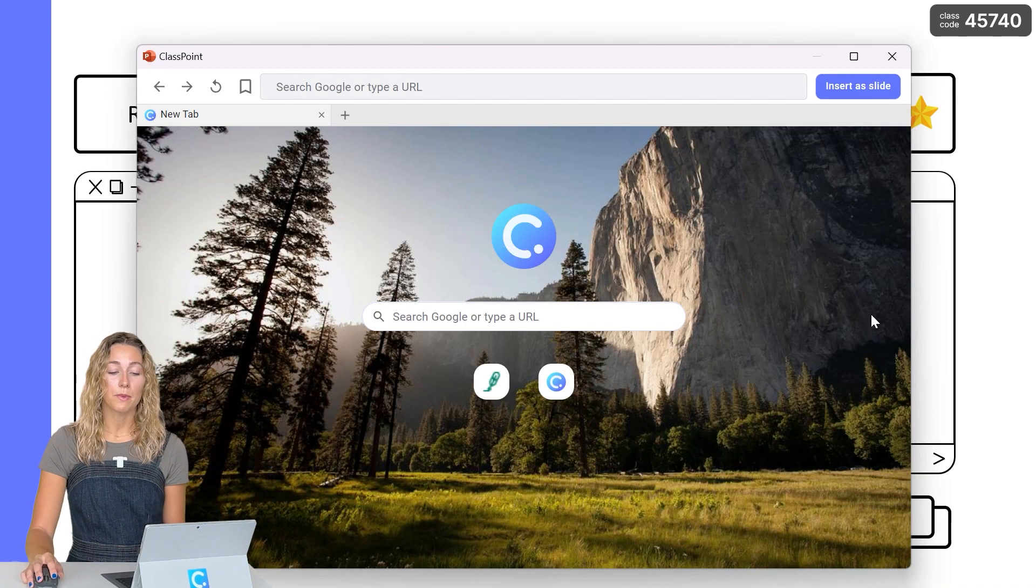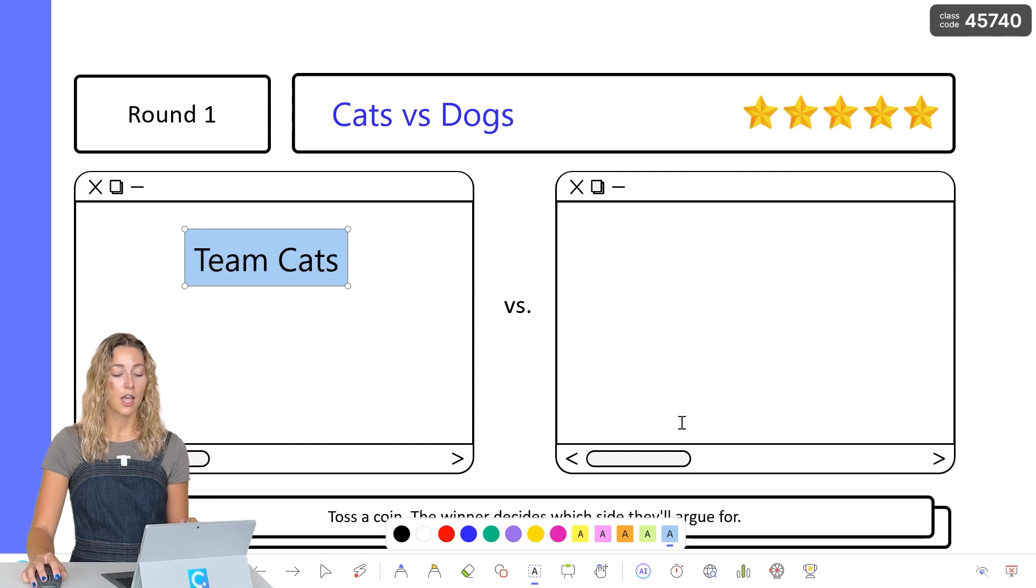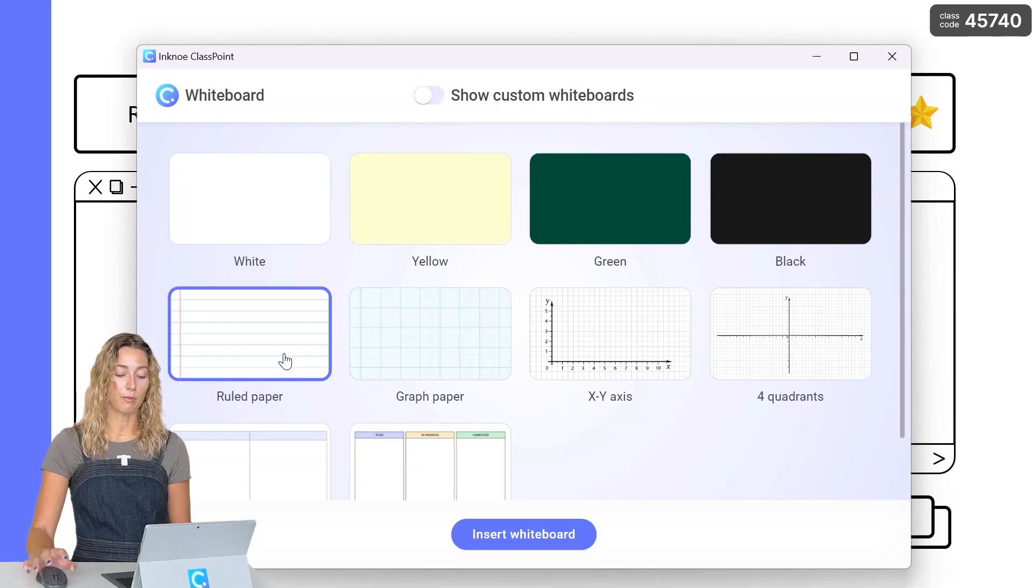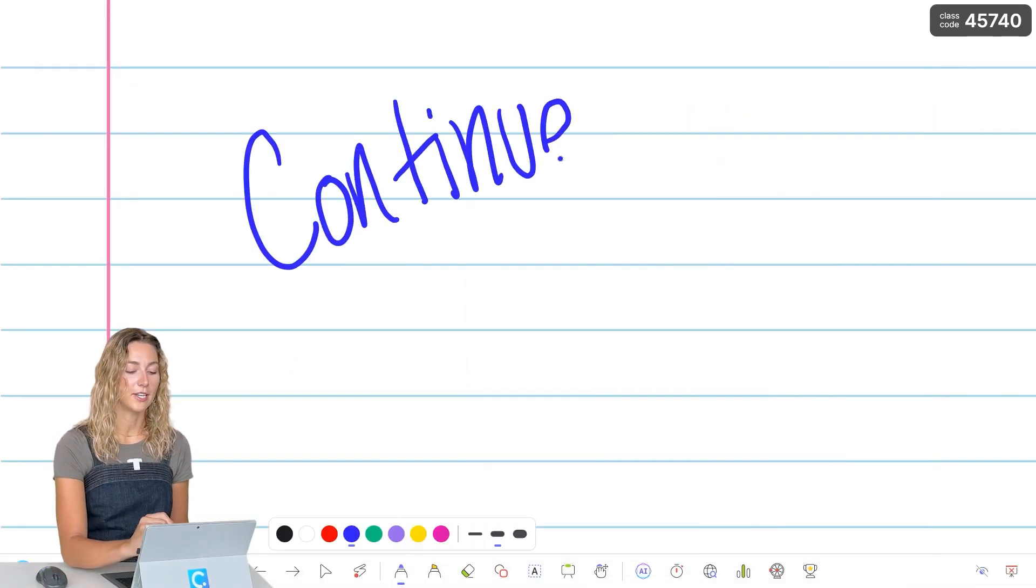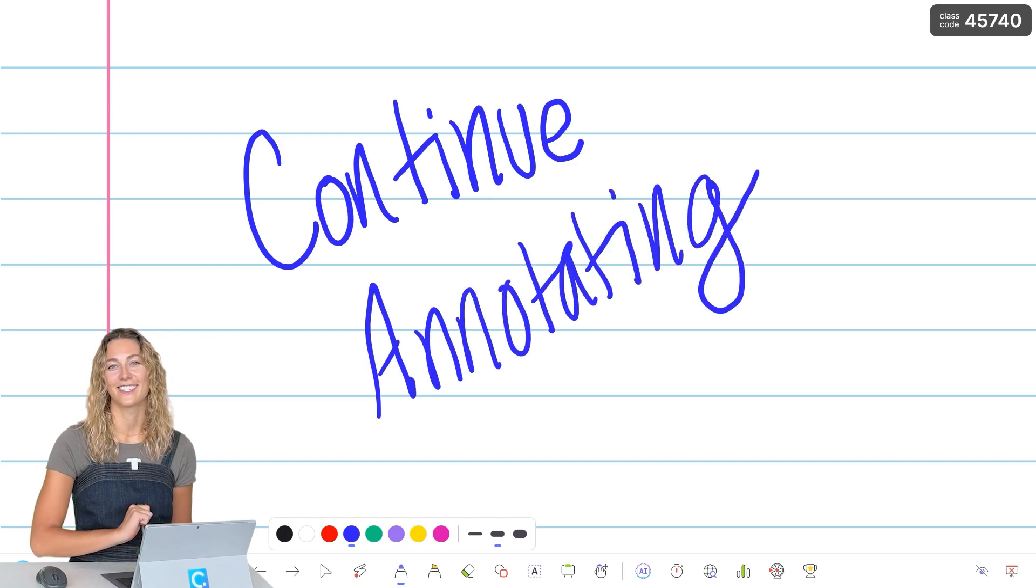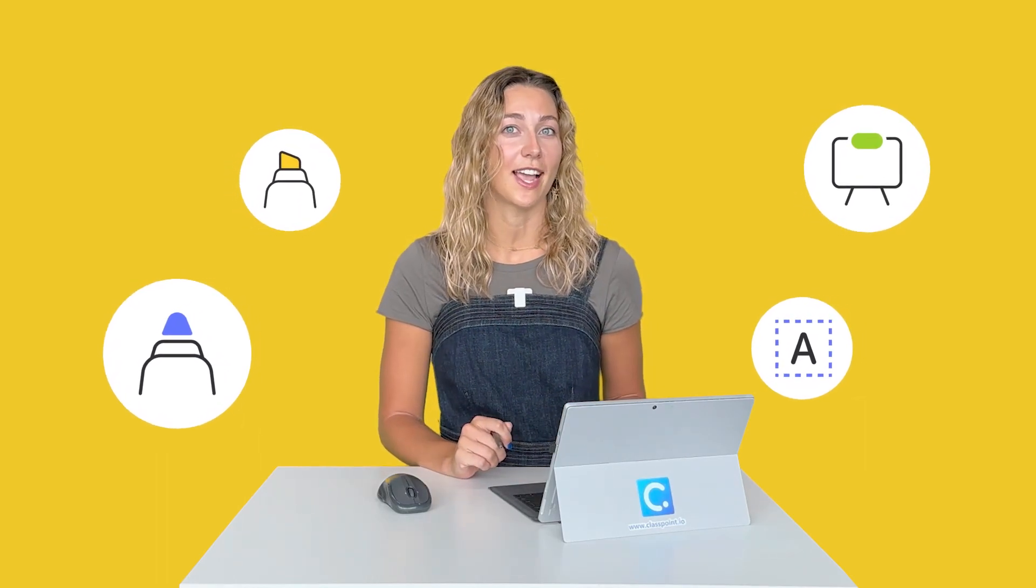If you find yourself running out of space when making all of these annotations, you can always use a custom whiteboard background to continue annotating right on your slides. I love this ability to add more information as needed when questions arise or you need to add unexpected details and information to your slides.